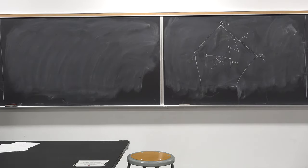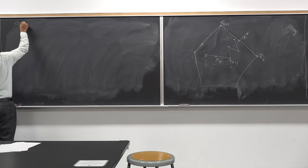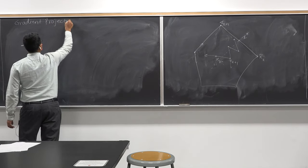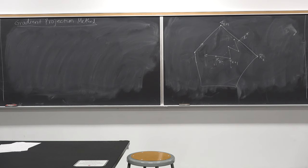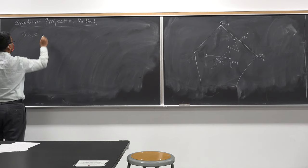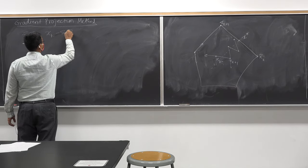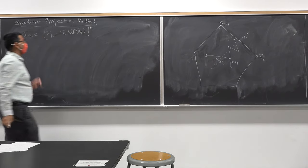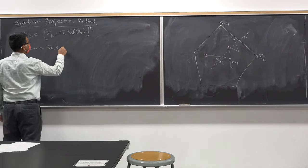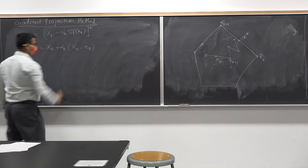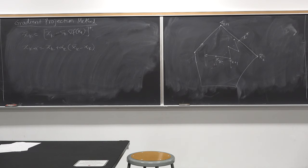Any questions before I go to the next method? The next method is the gradient projection method. This is where we use the projection: you do a gradient descent step, take the projection, get x̄_k, and then run one step of the usual optimization method.